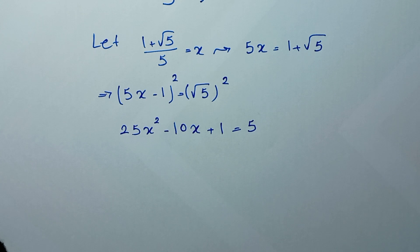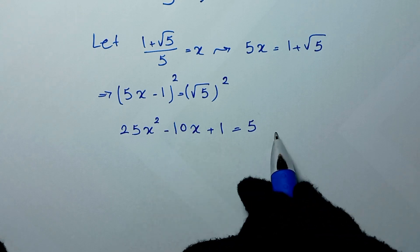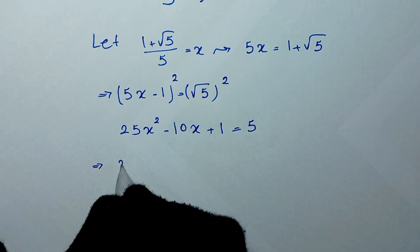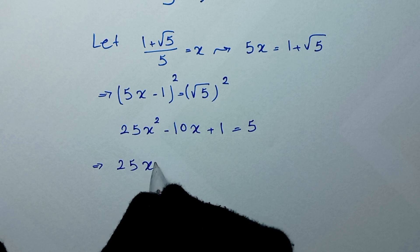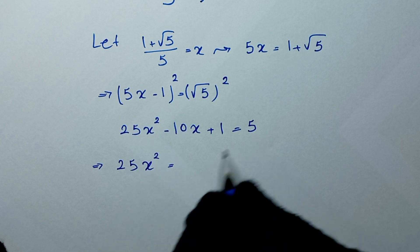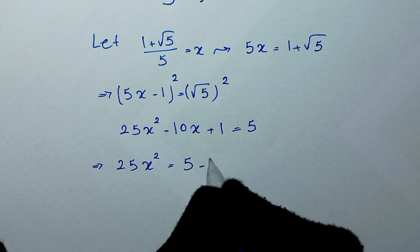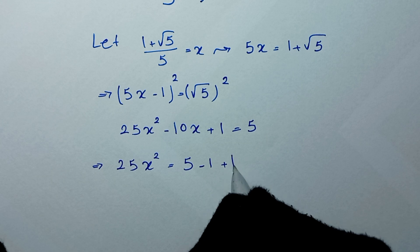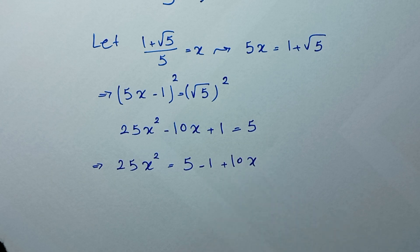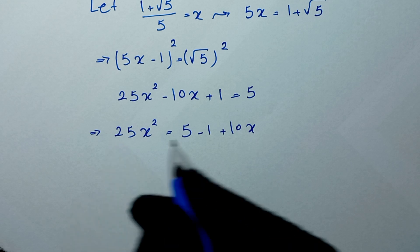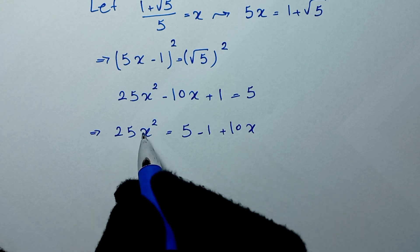In the next step, we take these terms to the other side and it will be 25x squared is equal to 5 minus 1 plus 10x, which gives us 25x squared equals 4 plus 10x. Then we divide both sides of this equation by 25.